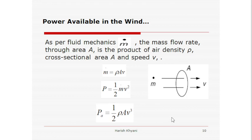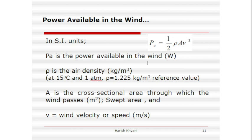Now, this is the formula of power available in the wind, that is, half rho A v cube. Rho is air density, A is cross sectional area, and v is velocity. Let's read this in unit form. P_a is the power available in the wind in watts. Air density is in kilogram per meter cube. As a reference, air density at 15 degree centigrade and one atmosphere pressure is 1.225 kilogram per meter cube. Cross sectional area through which wind passes is in meter square. And v is wind velocity or speed in meter per second. All units of this formula have been explained.